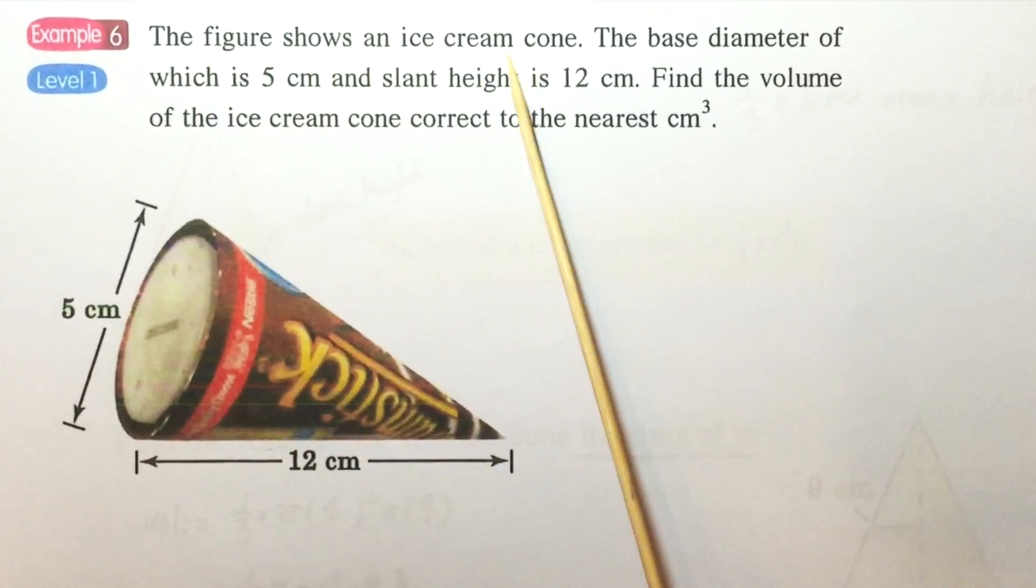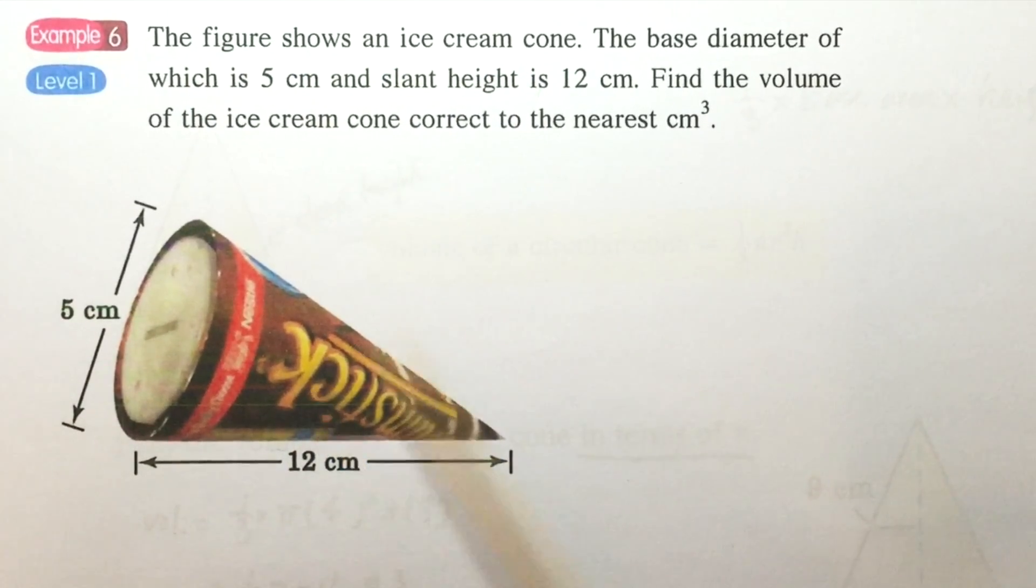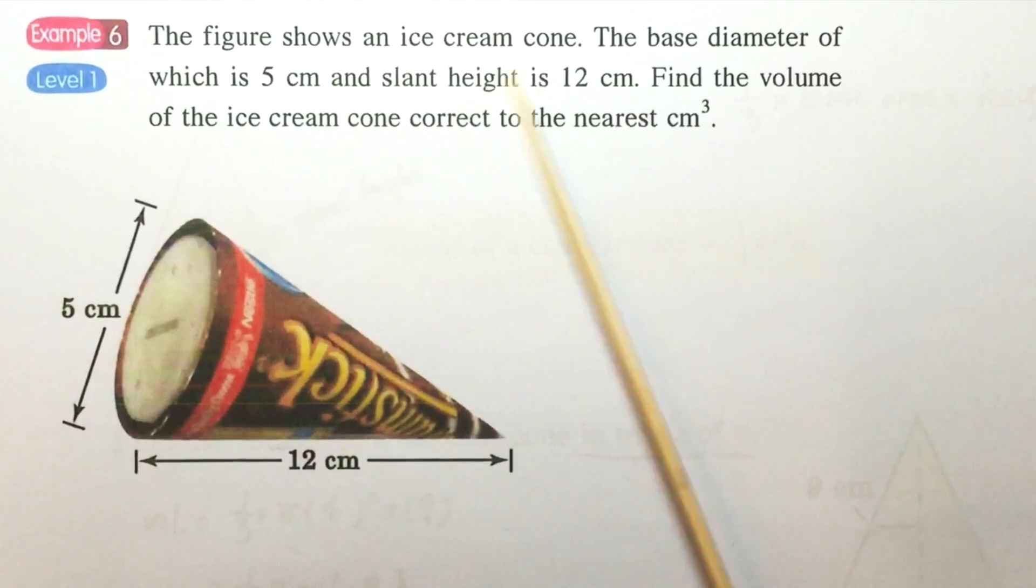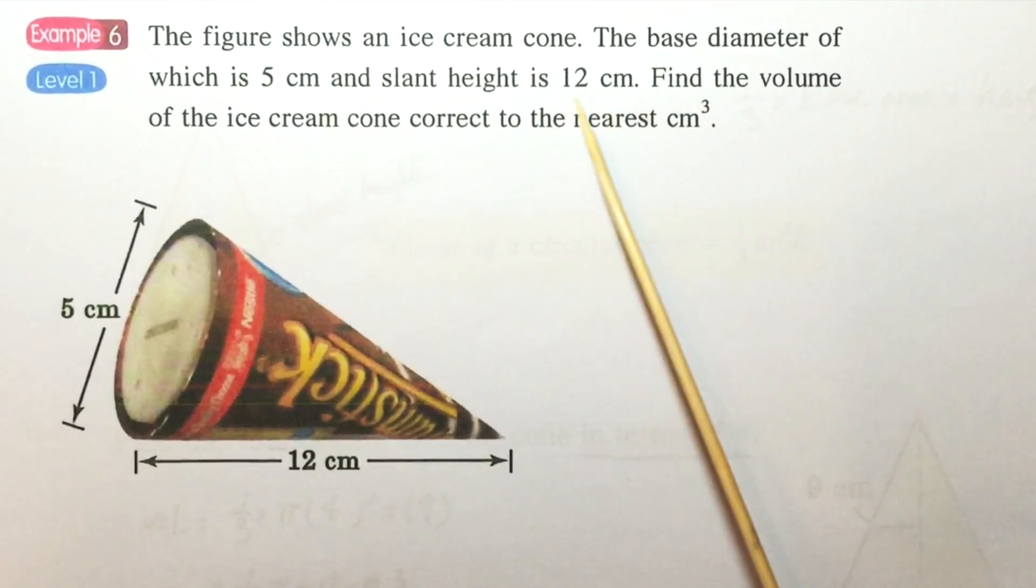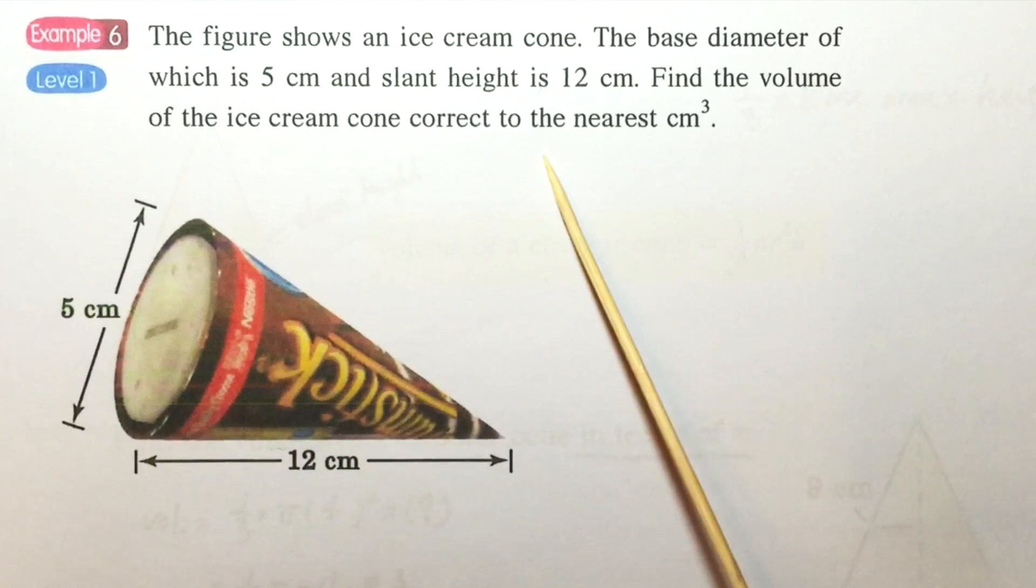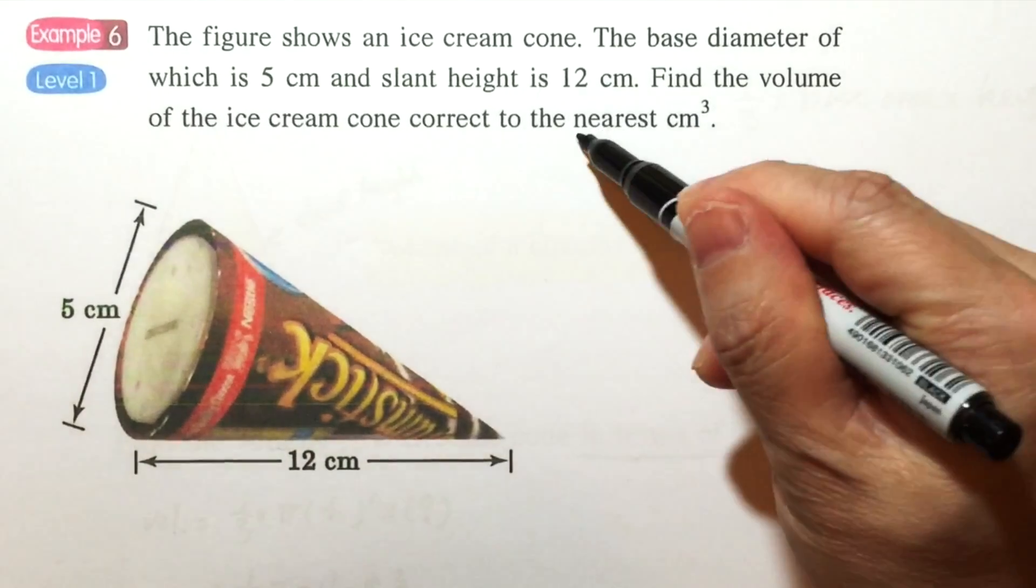Example 6. The figure shows an ice cream cone. The base diameter is 5 cm and slant height is 12 cm. Find the volume of the ice cream cone correct to the nearest cm³.